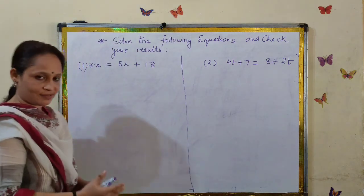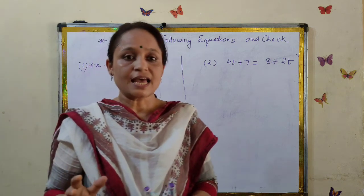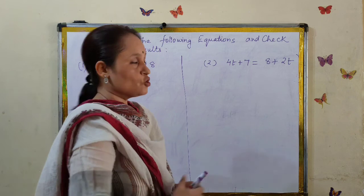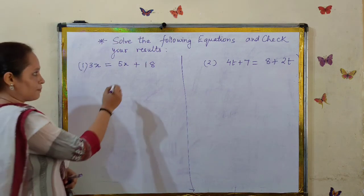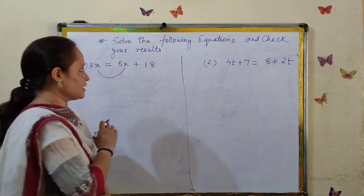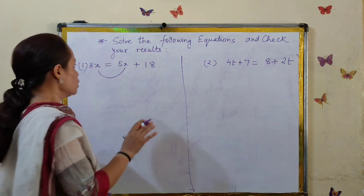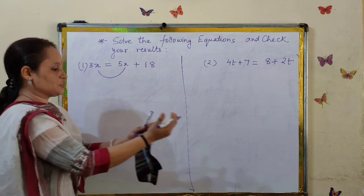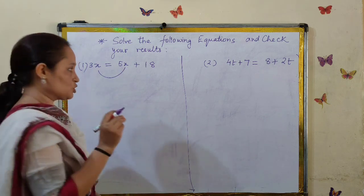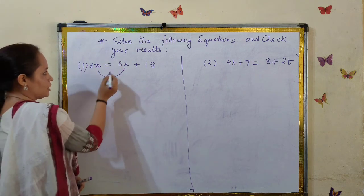Solving this is also very simple. We have to bring all the like terms on one side and the constant terms on the other side. Shifting a term from one side to the other is called transposing. In equations, transposing a term from one side to the other is called transposing.